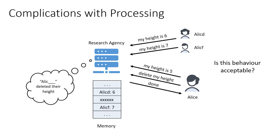Well, it may or may not be acceptable — it depends on the situation and what the law says. But what I am more interested in is what we mean by this behaviour, because irrespective of whether this behaviour is allowed or not, we need to be precise about what we are talking about. More specifically, is there some property we can precisely state such that any system with that property does not exhibit this behaviour?